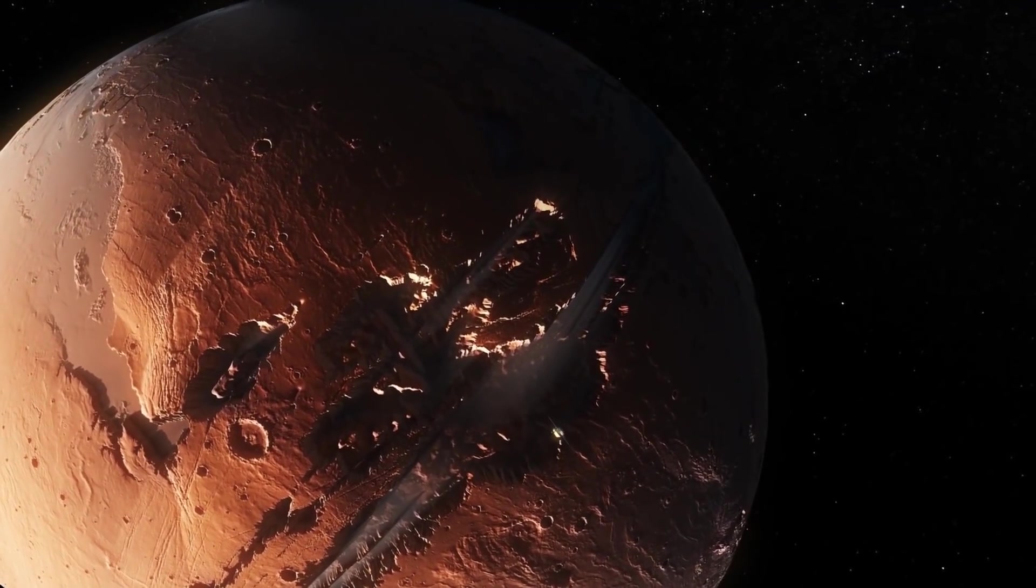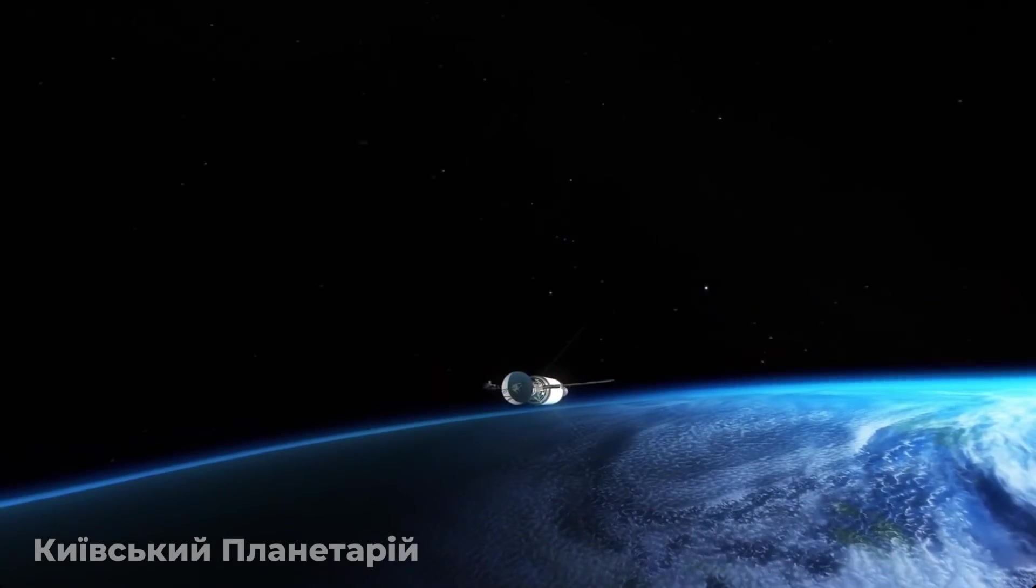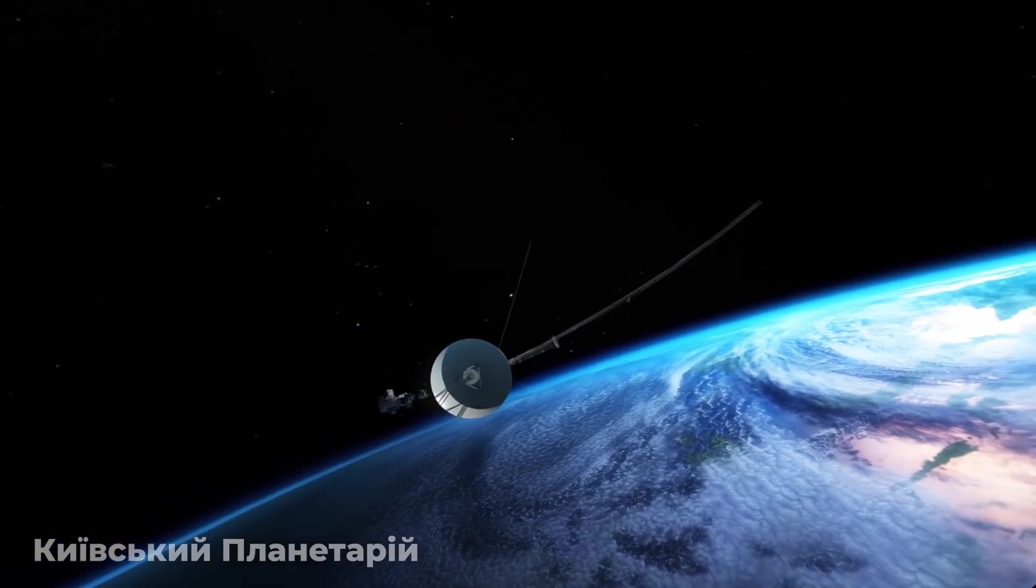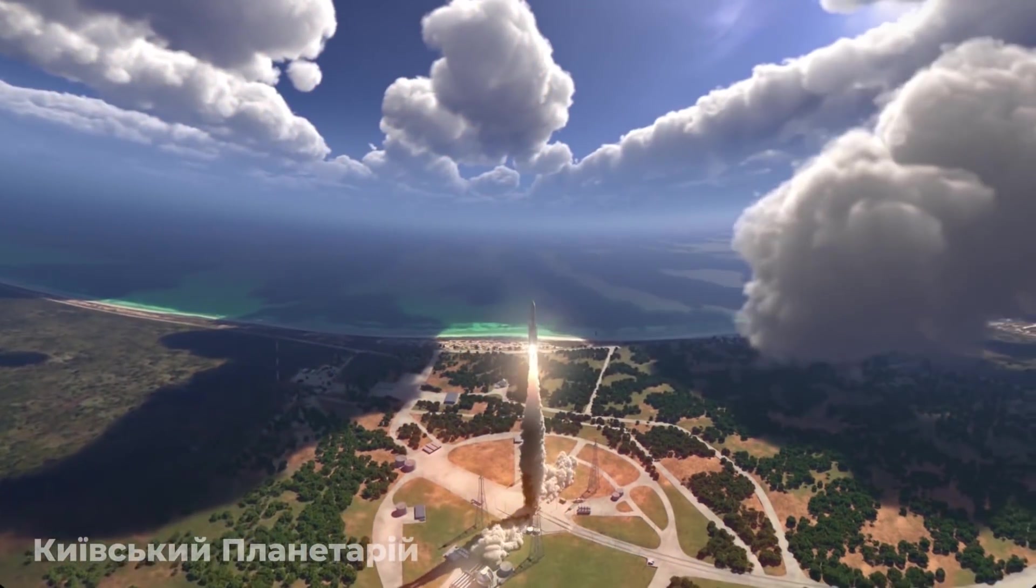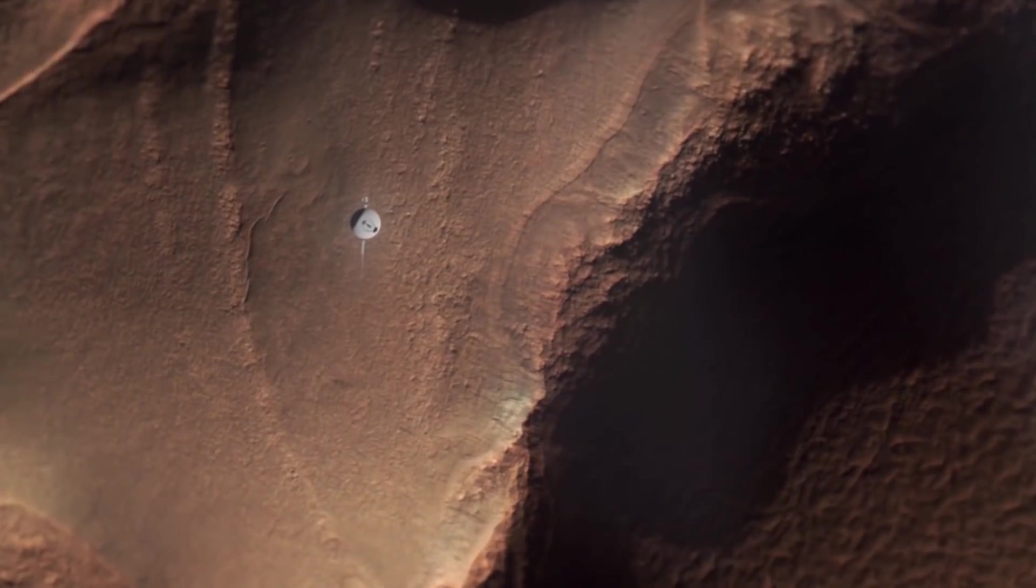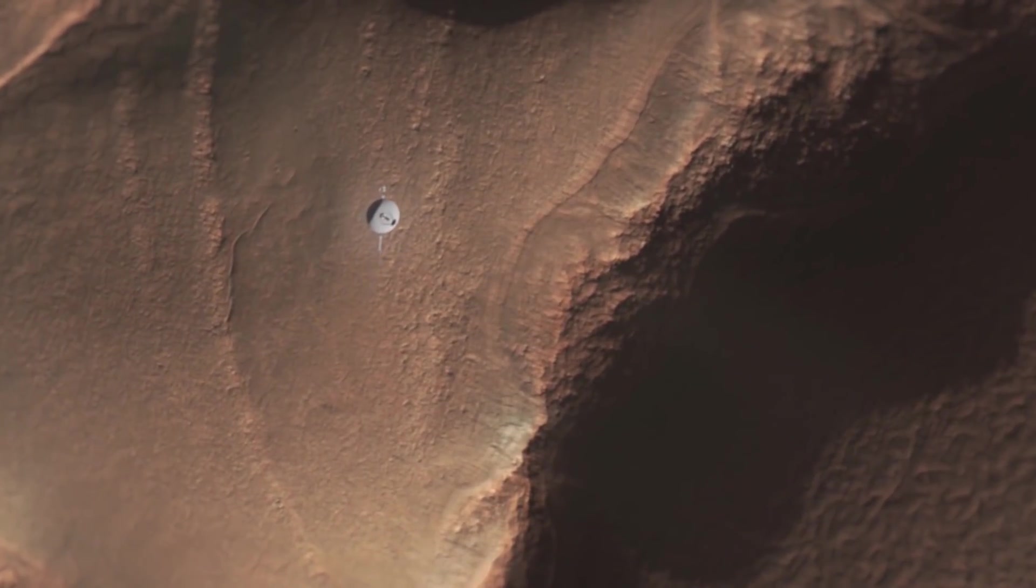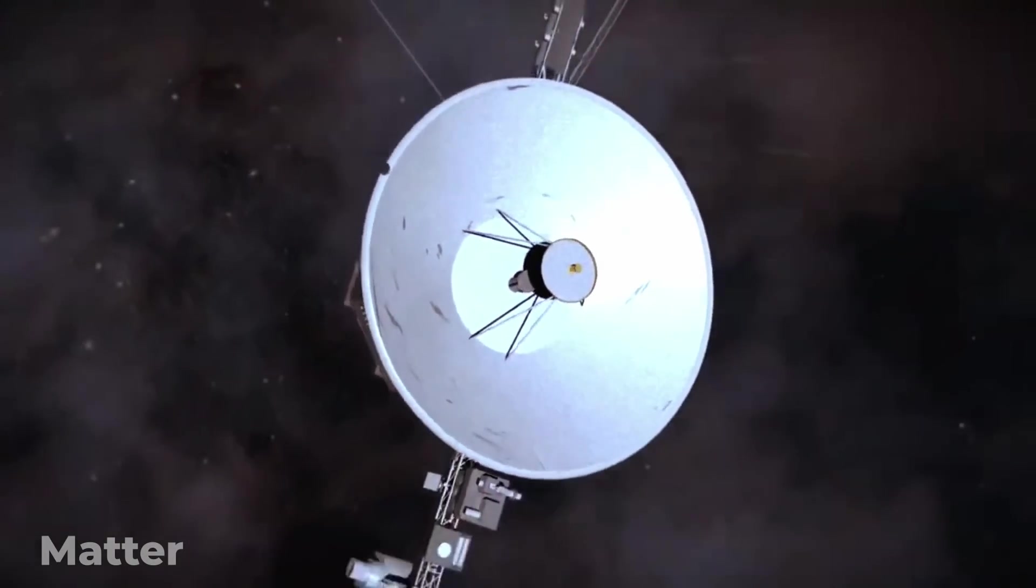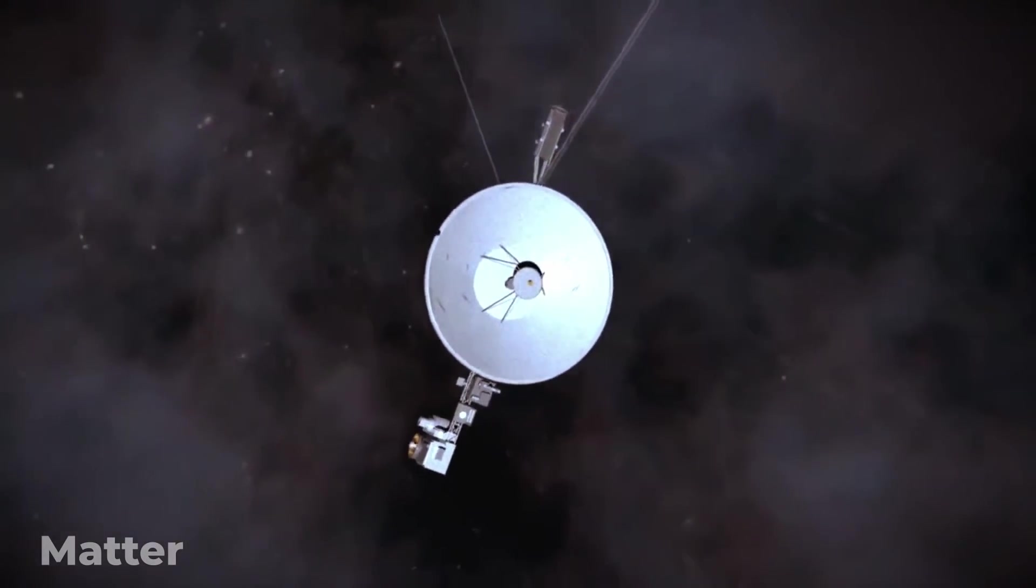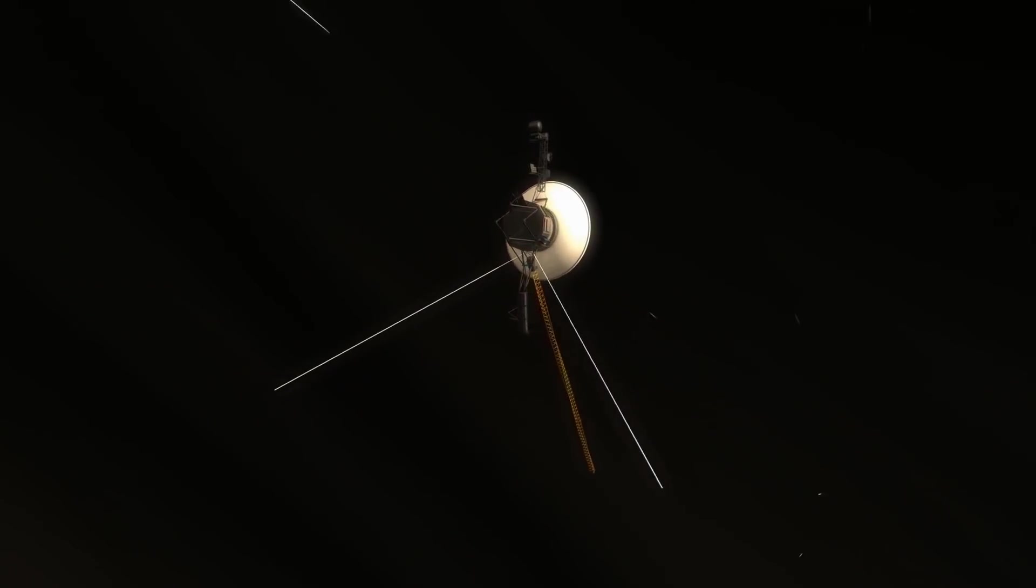Some of the most incredible discoveries in human history have been found by the two Voyager spacecrafts. Even though they were launched over 40 years ago, they are still collecting data while flying through space at approximately 38,000 miles per hour, or 17 kilometers per second.